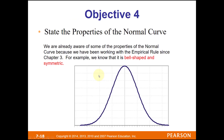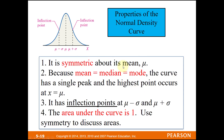Some properties of the normal distribution: it's bell-shaped and symmetric. It's symmetric about its mean. In Section 7.2 we'll talk about the standard normal, which just means the center is zero. Because of this symmetry, the mean, median, and mode are all the same value — dead center. The curve also has inflection points, which is where the curve changes concavity.